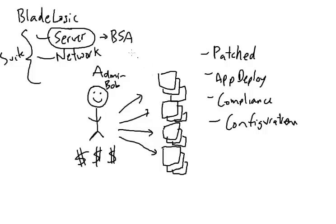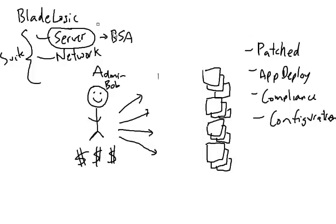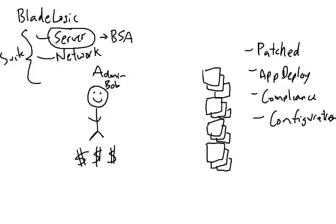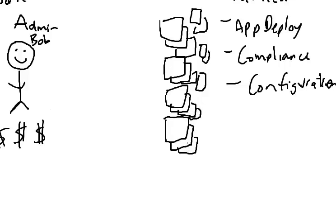So the idea with BladeLogic is that we put a layer in between. Over here we have the servers, and we're going to move them a little further from Bob's reach, because we're going to put a layer of automation in between. We don't want Bob to be manually making these changes anymore, because there are just way more servers popping up. These can be physical or virtual servers — no matter what, they need to be managed, patched, and kept compliant to meet all the different requirements of the business.